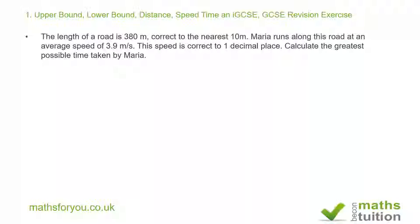The length of a road is 380 meters, correct to the nearest 10 meters. Maria runs along this road at an average speed of 3.9 meters per second, correct to one decimal place. Calculate the greatest possible time taken by Maria.